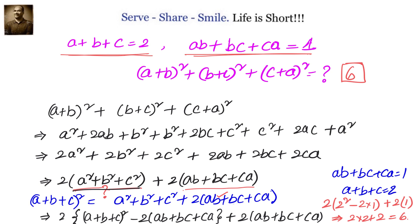Let us have a recap of this 9th grade algebraic identity problem as part of polynomials. We were given a plus b plus c equals to 2 and ab plus bc plus ca equals to 1. We had to find the value of (a+b)² plus (b+c)² plus (c+a)². Expanding, we found we need 2 into (a² plus b² plus c²) plus 2 into (ab plus bc plus ca). We know a plus b plus c and ab plus bc plus ca.